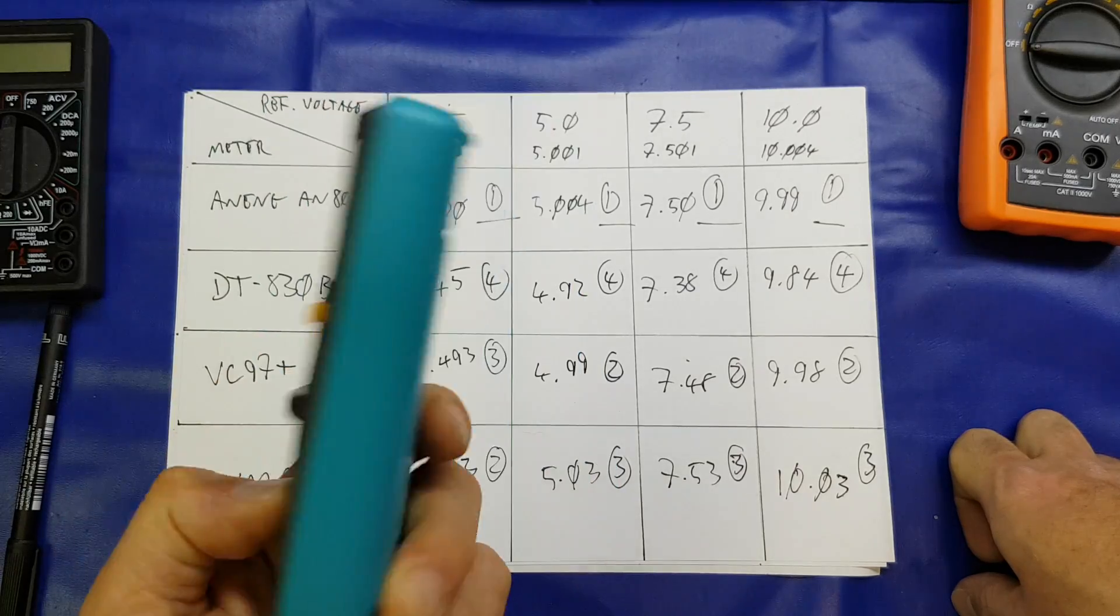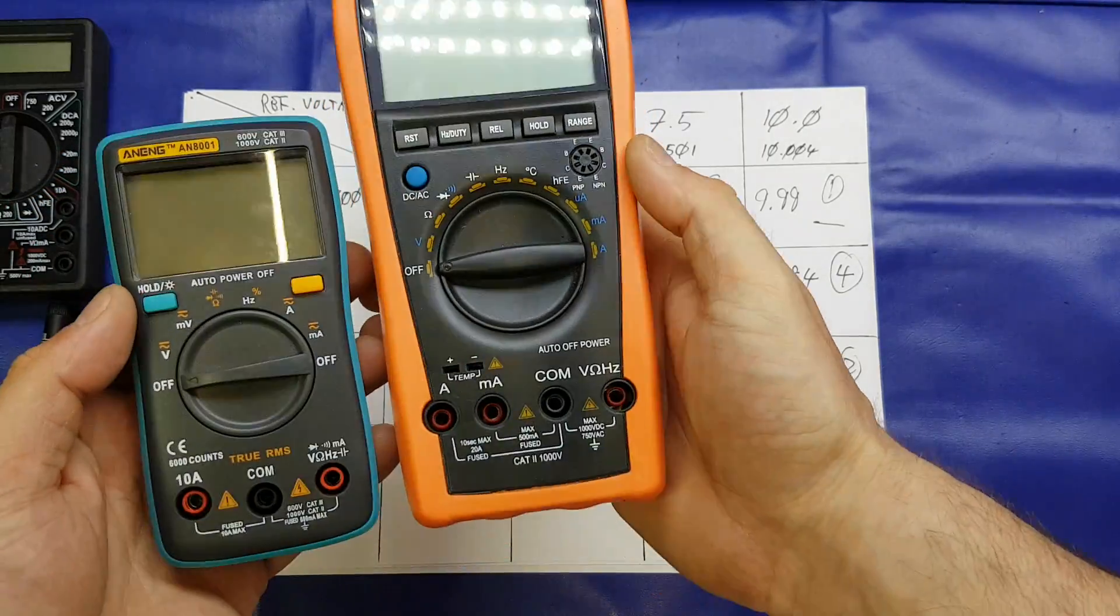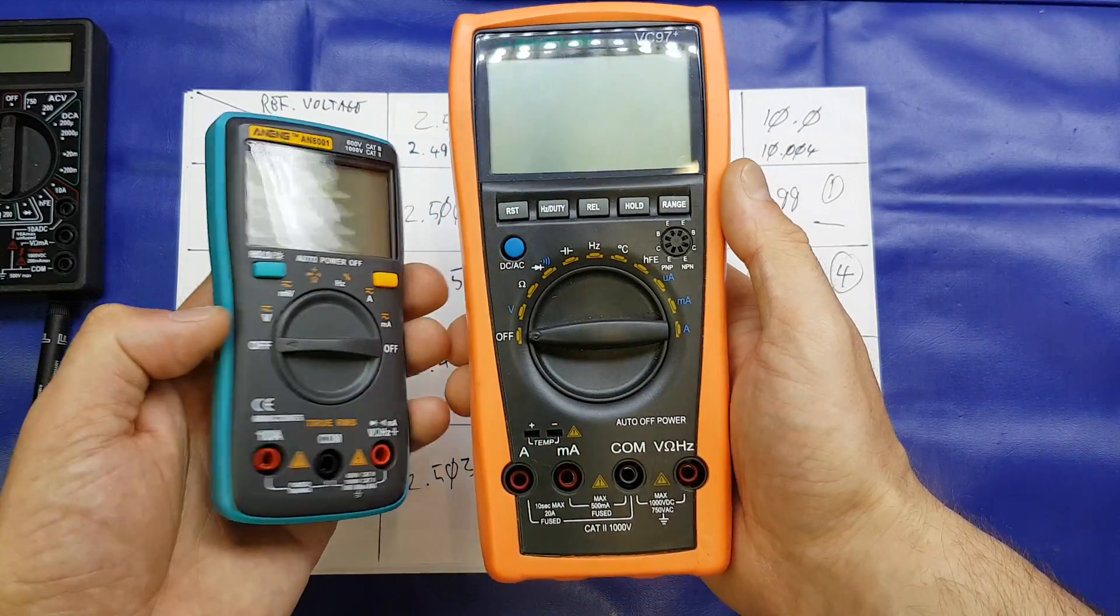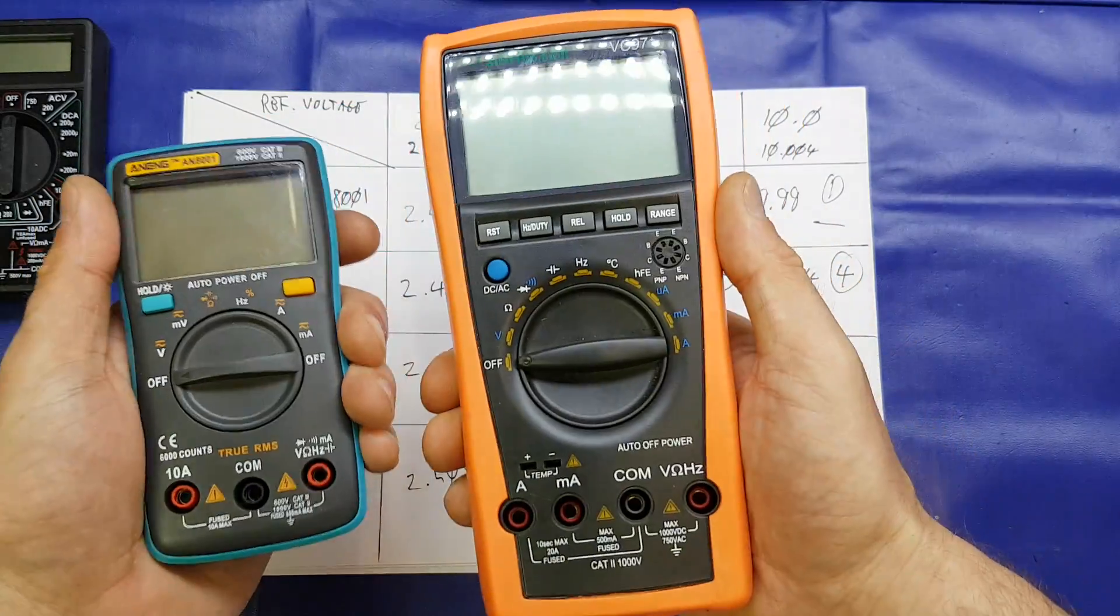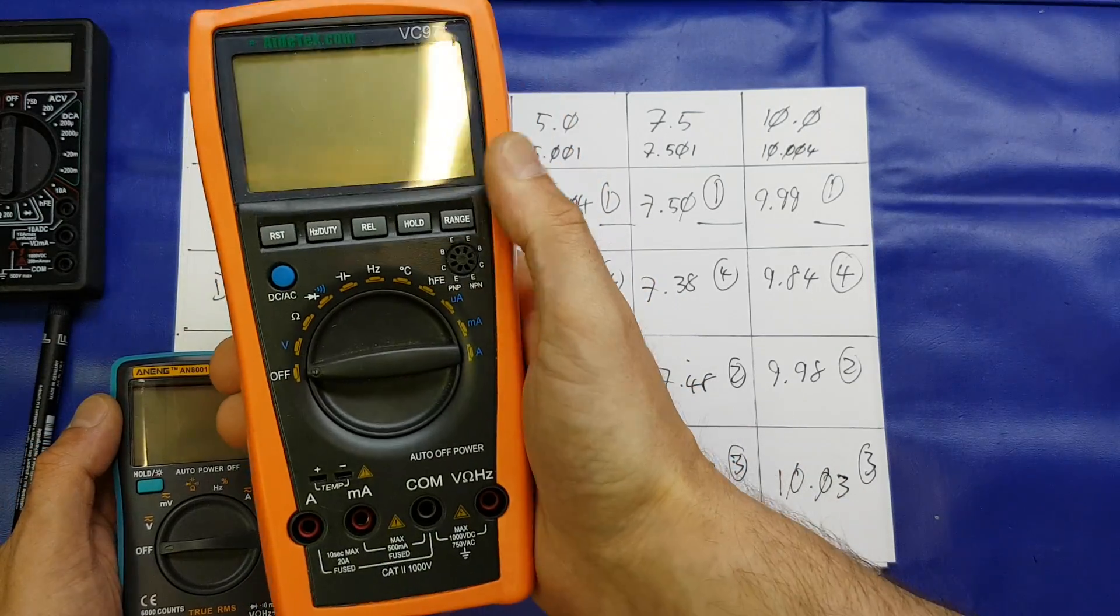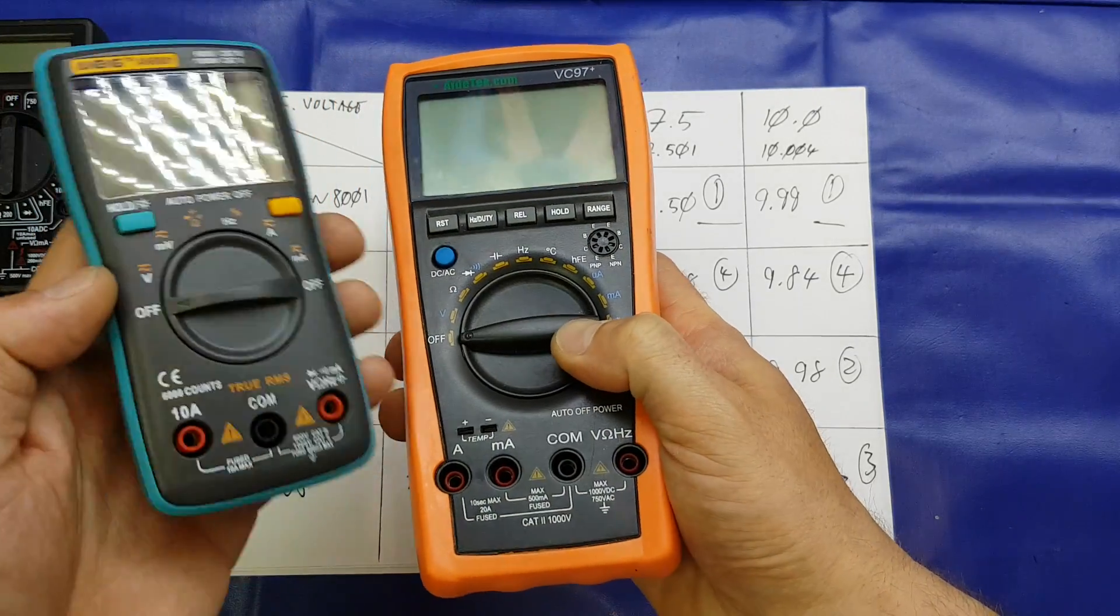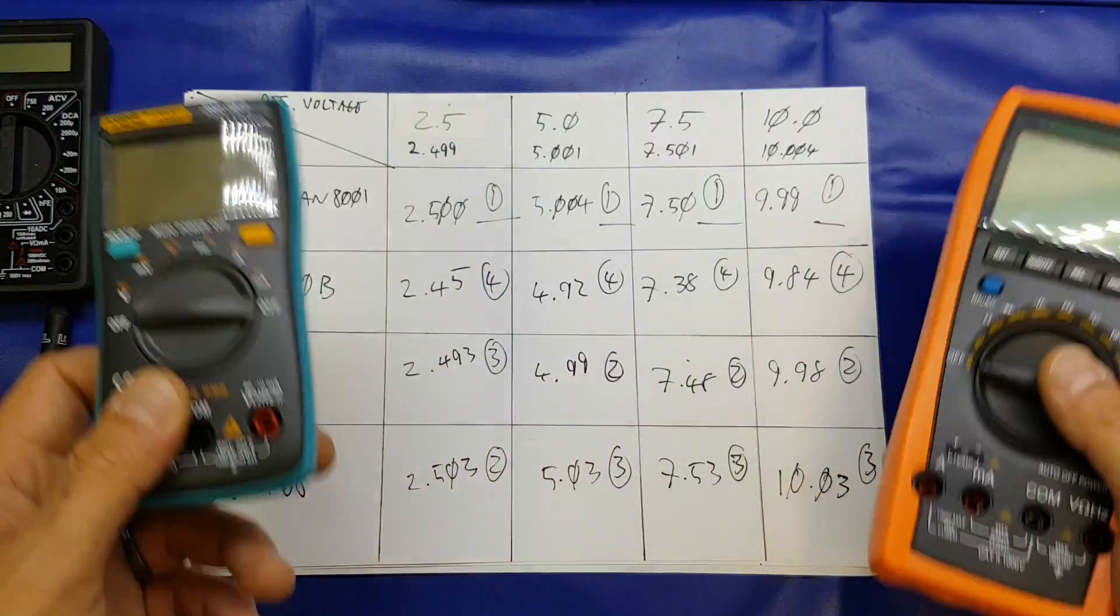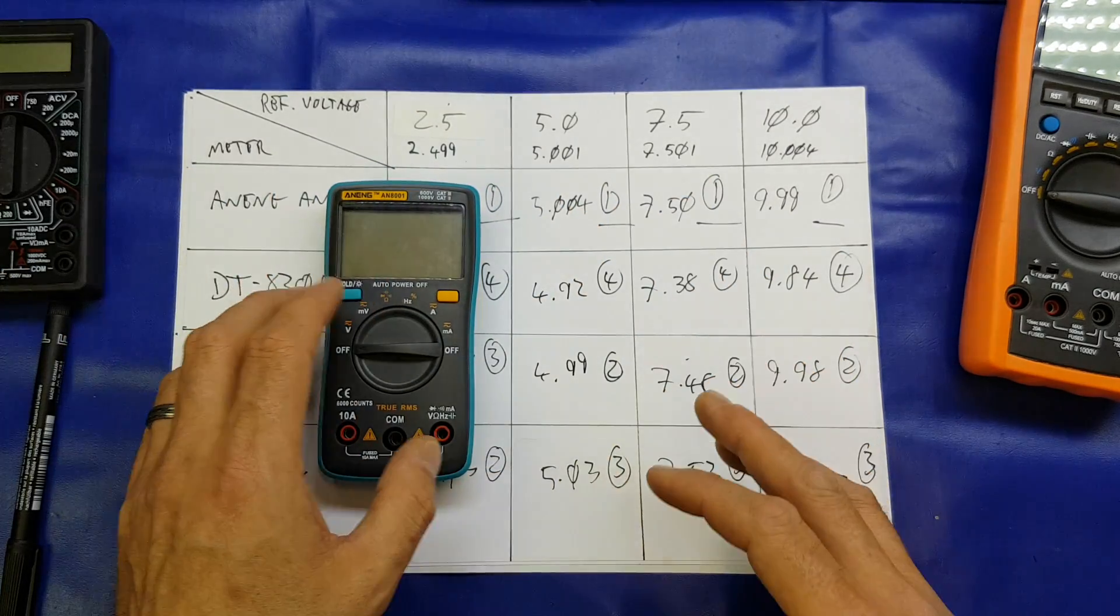But yeah, definitely, this is what I would go for, followed closely by the VC97. Bit bulkier, bit more, I wouldn't say it's a better looking meter, I think the Aneng is quite aesthetically pleasing, it's quite ergonomic, it's smaller, it's a nice little meter. The VC97, I'm not going to say it looks more the part, it's a nicer display, I think, probably brighter, it's not got as good a count on it as the Aneng's got. So I think I've exhausted my praise for this, it's a great little meter, I would definitely recommend it.